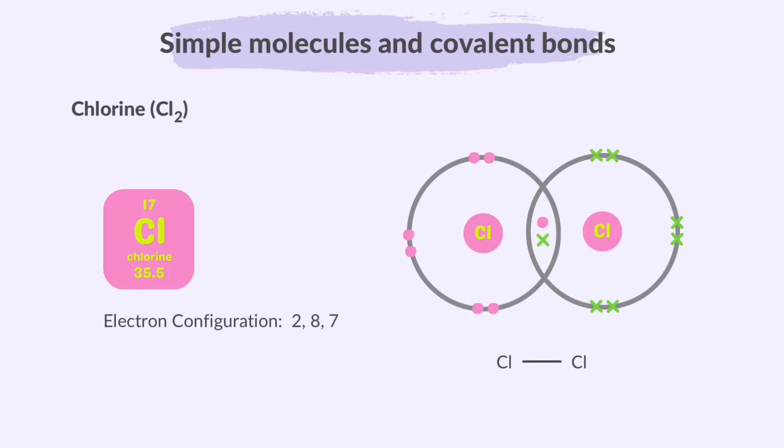Chlorine has seven electrons in its third outermost shell. To achieve a full outer shell with eight electrons, two chlorine atoms share electrons to form a stable molecule, Cl2, creating a single covalent bond that holds them together.